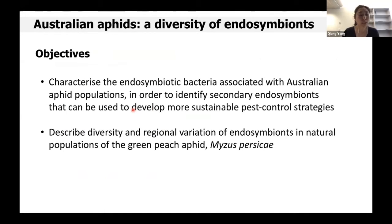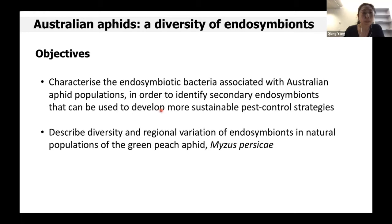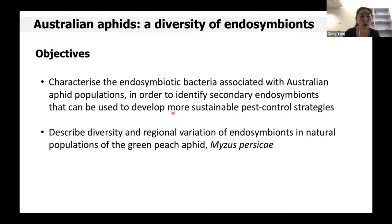However, the endosymbiont diversity of Australian aphids is still unknown. None of the secondary endosymbionts in Australian aphids has been reported, except for a Regiella infection detected in a green peach aphid population collected at Bacchus Marsh in Victoria 18 years ago by Vorburger. To better understand the secondary endosymbiont diversity in Australian aphids and to identify endosymbionts that can be used to develop more sustainable pest control strategies, we characterized the endosymbiont diversity of a total of 30 aphid species in Australia, with a particular focus on the green peach aphid.